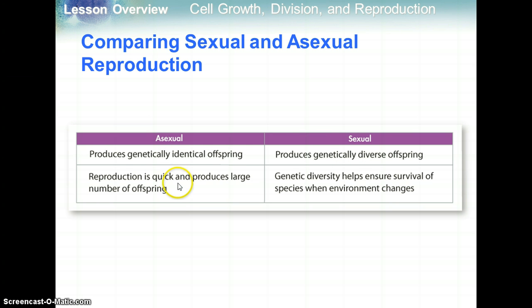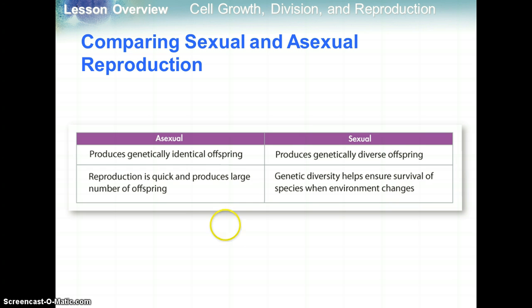Asexual reproduction can produce offspring very quickly in large numbers. With sexual reproduction, the genetic diversity or differences help ensure the survival of the species when there's some sort of environmental change — like maybe an epidemic of some sort of virus.